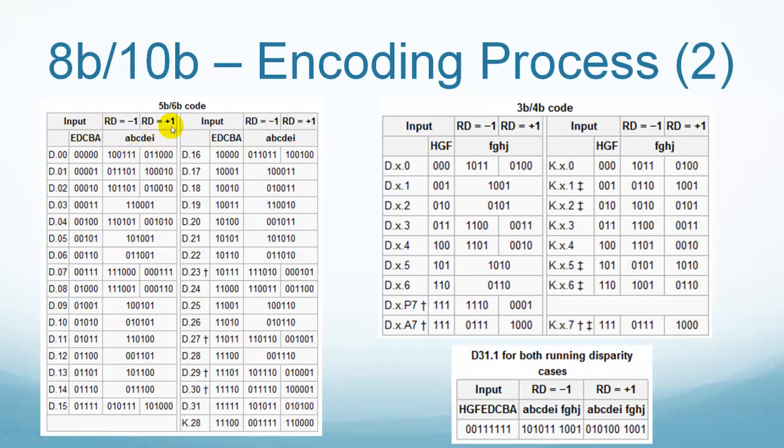If the previous running disparity is 1, which means there is 1 more 1-bit than 0-bit, then 011000 is chosen. So in this code, it has two less 1's than 0's. 1 plus minus 2 equals minus 1. The running disparity becomes minus 1. In the 3B4B mapping table, it follows the same procedure. This running disparity process makes sure the difference between the number of 1's and 0's is always between 1 and minus 1. And the 5B6B and 3B4B mapping process makes sure there is frequent transitions from 1 to 0 and from 0 to 1, so the clock can be easily recovered on the receiver side.